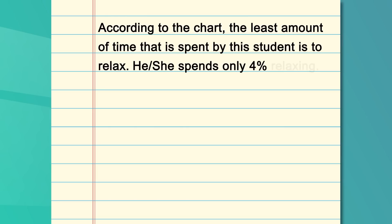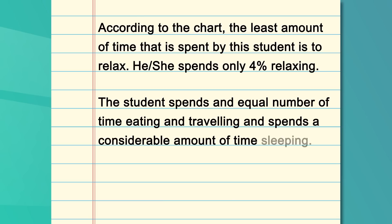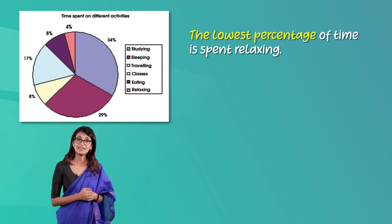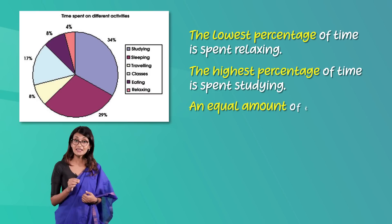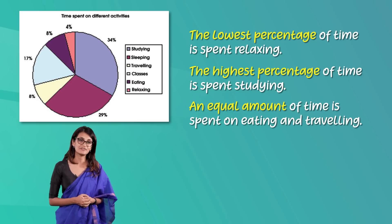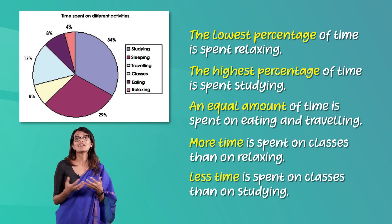He or she spends only 4% relaxing. The student spends an equal amount of time eating and traveling, and spends a considerable amount of time sleeping. He or she spends 17% of his or her time at classes. For example, using the given phrases: 'The lowest percentage of time is spent relaxing'; 'The highest percentage of time is spent studying'; 'An equal amount of time is spent on eating and traveling'; 'More time is spent on classes than on relaxing'; 'Less time is spent on classes than on studying.'